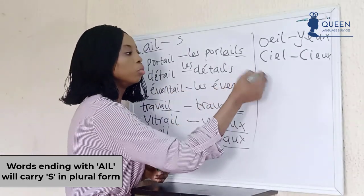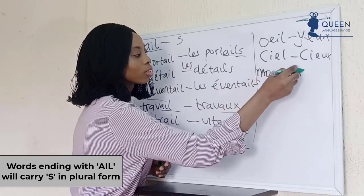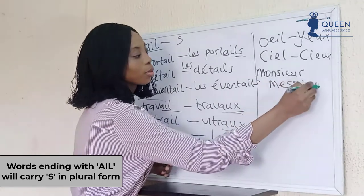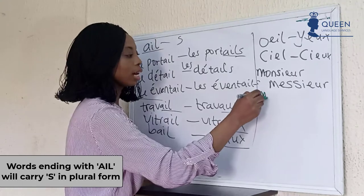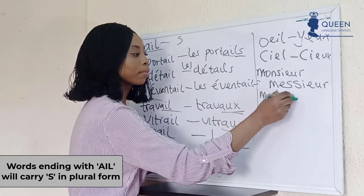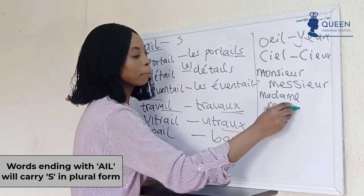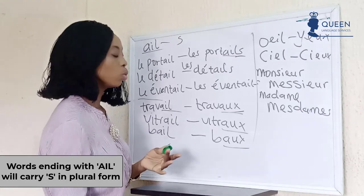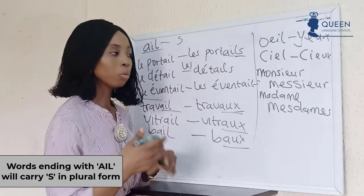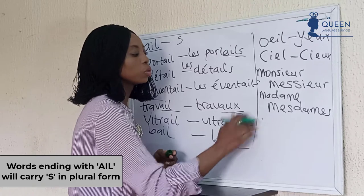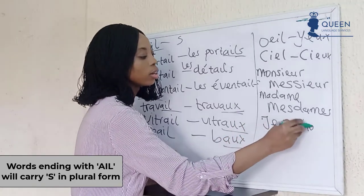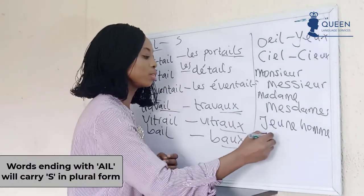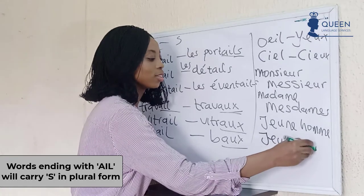We can ask about 'monsieur' — the plural form will be 'messieurs.' The same with 'madame' — we have it as 'mesdames.' And 'mademoiselle' becomes 'mesdemoiselles.' We have 'jeune homme' in the singular form, but in the plural form we have 'jeunes gens.'